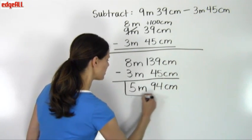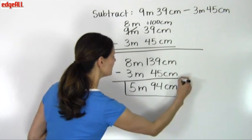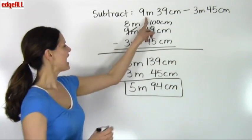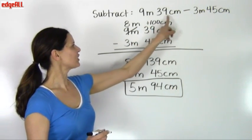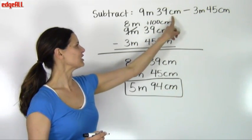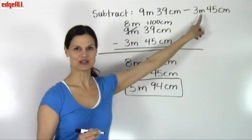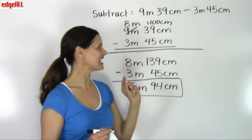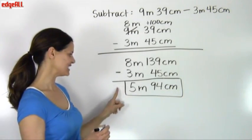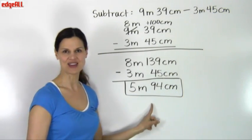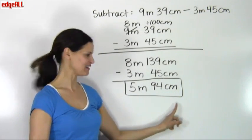So my answer to 9 meters 39 centimeters minus 3 meters 45 centimeters is 5 meters, 94 centimeters.